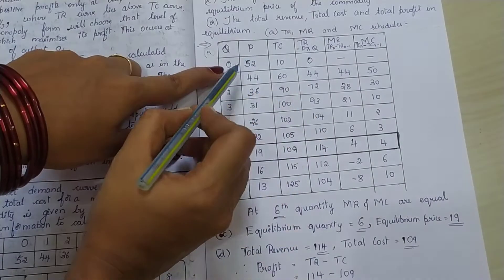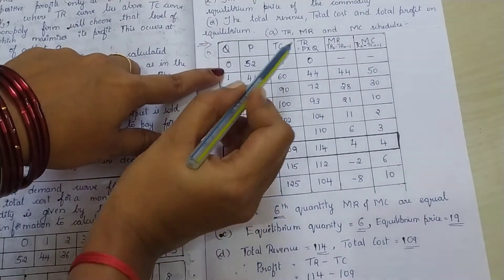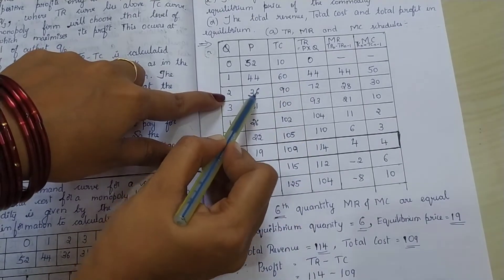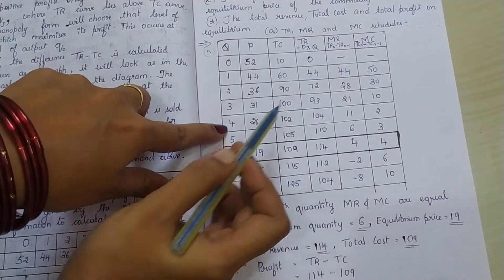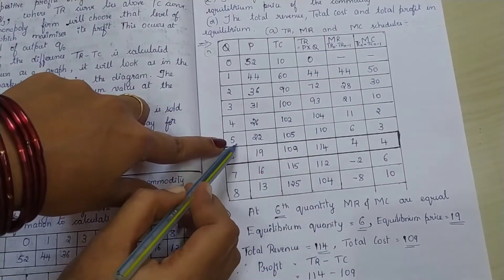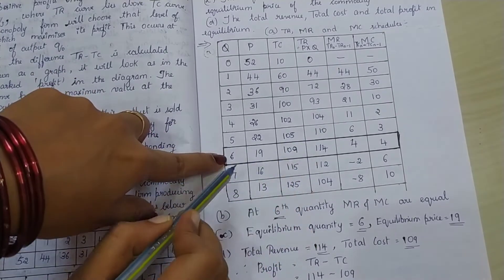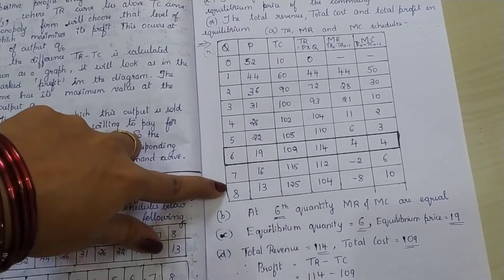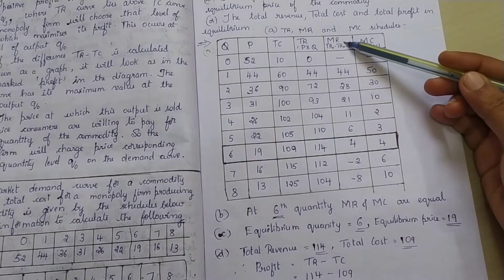Go on multiplying Q into P or P into Q. Either way, it is the same. 0 into 52, first one will be 0. 1 into 44, 44. 2 into 36, 72. 3 into 31, 93. You can use your calculators. 4 into 26, 104. 5 into 22, 110. 6 into 19, 114. 7 into 16, 112. 8 into 13, 104. So, total revenue we have calculated. Now we have to calculate the marginal revenue.